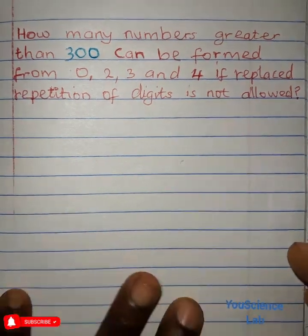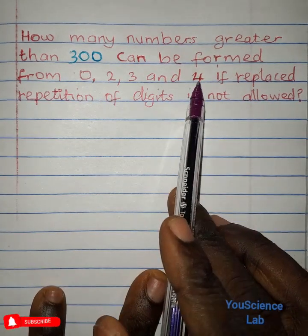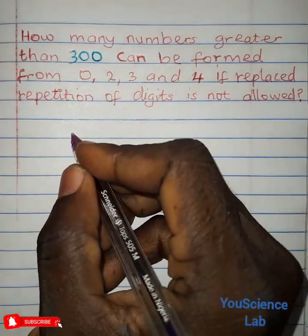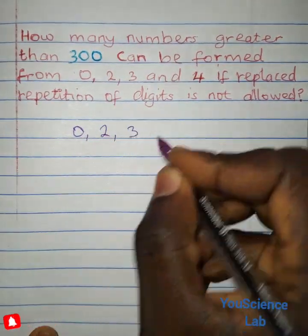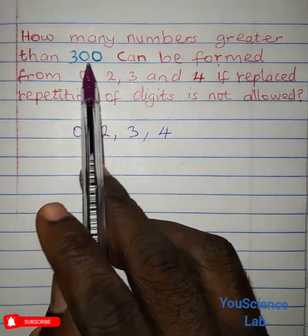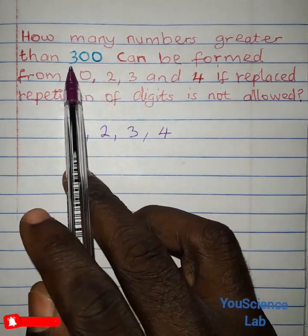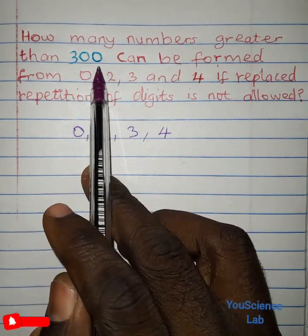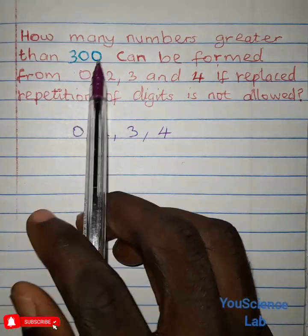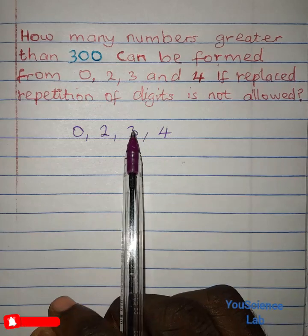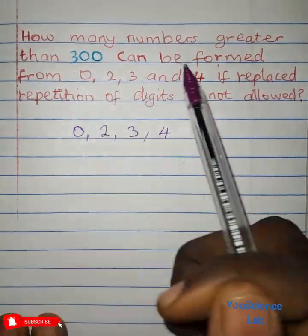Now the key note here is that each of these digits when taken must not be replaced. So we have the digits 0, 2, 3 and 4. We are to form numbers that are greater than 300. To form numbers that are greater than 300, it means that we can have a three-digit number that is greater than 300 and we can also have four-digit numbers that are greater than 300.